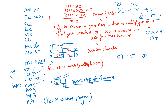Since we used PUSH at the start, we now POP H and POP B to restore the original register values, then return to the main program where the result is stored. This completes the BCD to binary conversion program for the 8085 microprocessor. Thank you.